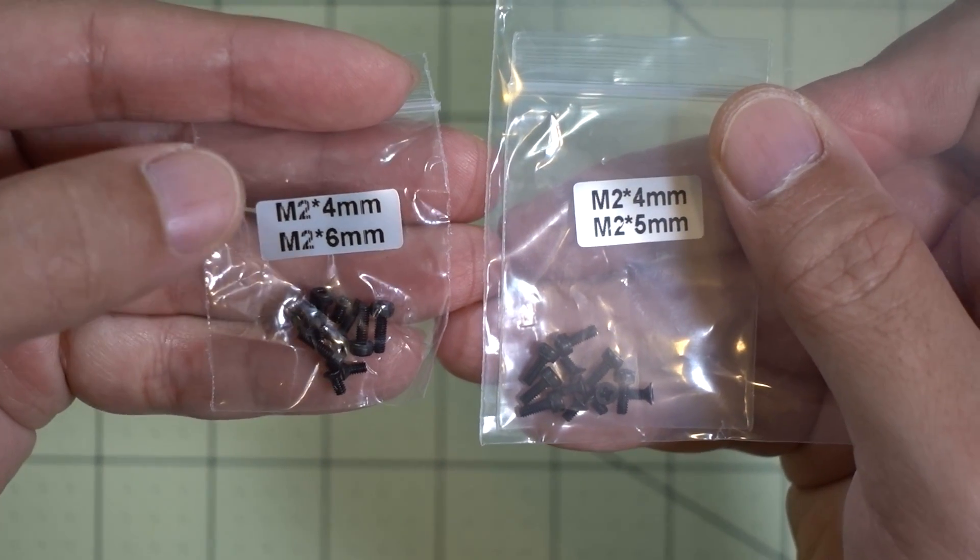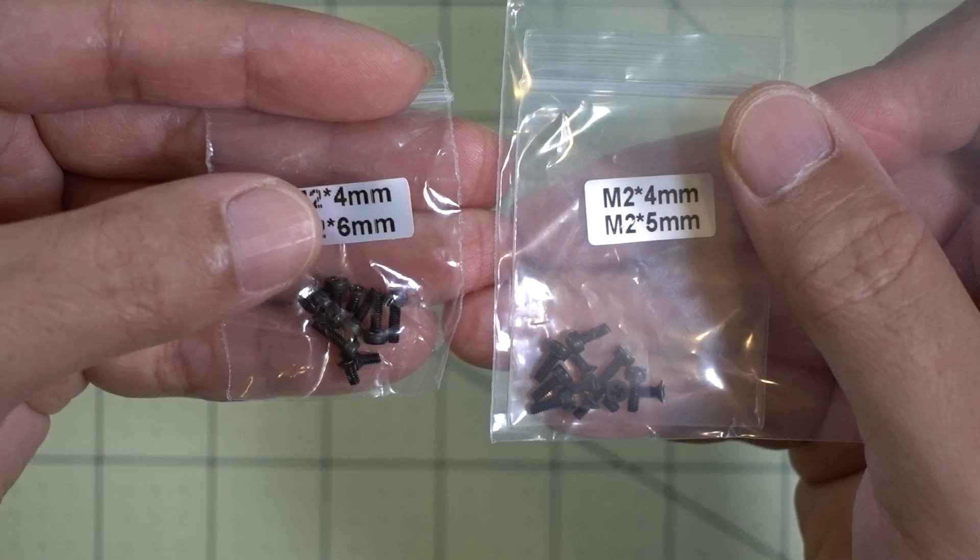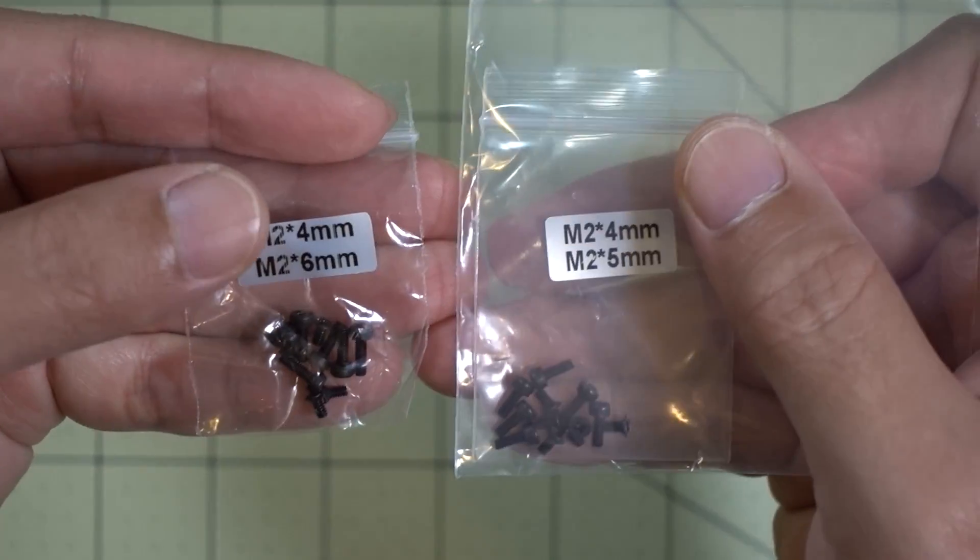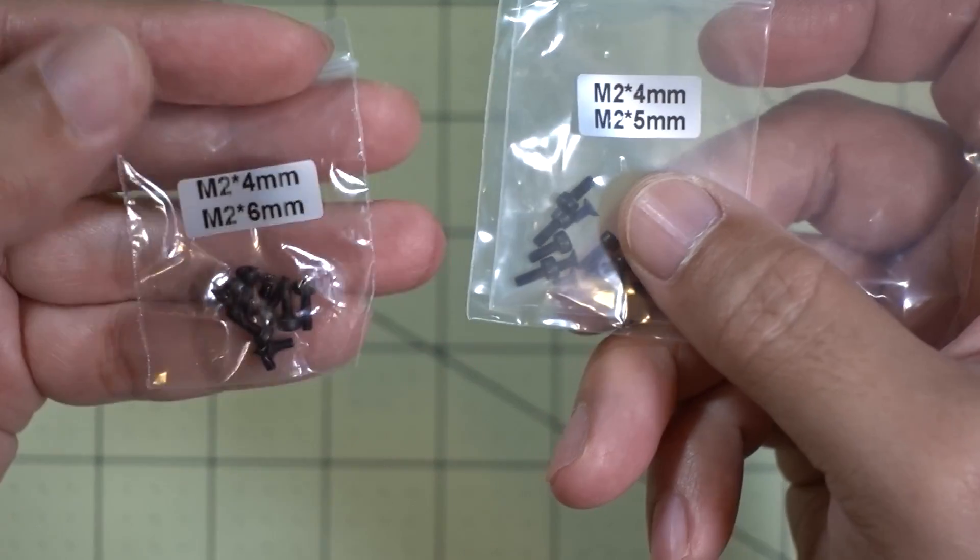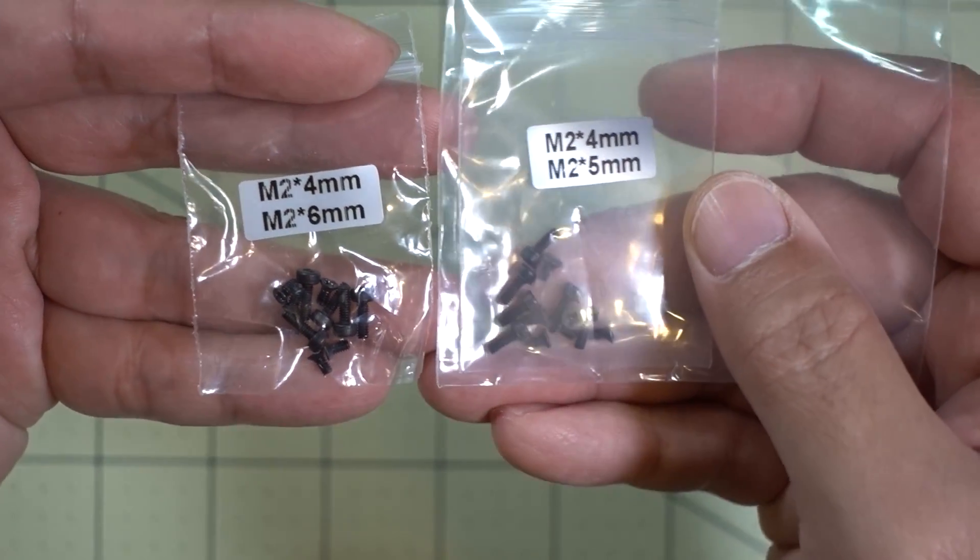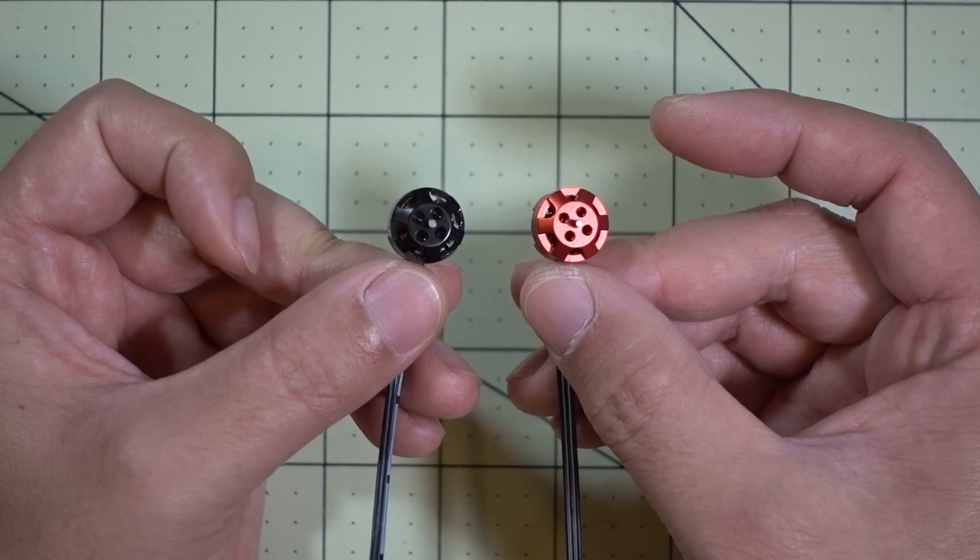And the last difference is the DYS comes with M2 4 and 6 millimeter screws, and the Racerstar comes with M2 4 and 5 millimeter screws. So that's the other last difference between these two motors.